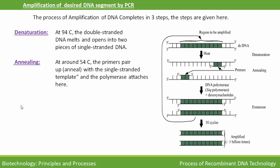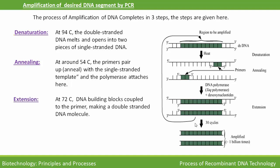Now come to the third step, i.e. extension. It occurs at 72 degrees centigrade temperature. Here the DNA building blocks, i.e. deoxyribonucleotides, couple to the primer. As you can see in the diagram, the DNA building blocks couple to the primer, making it a double-stranded DNA molecule. So after extension, you will get one more copy of the double-stranded DNA molecule.